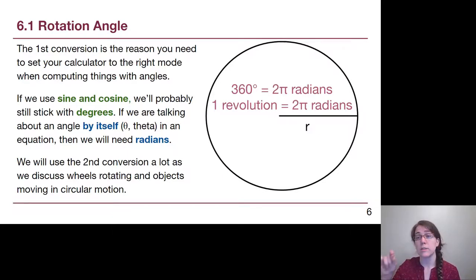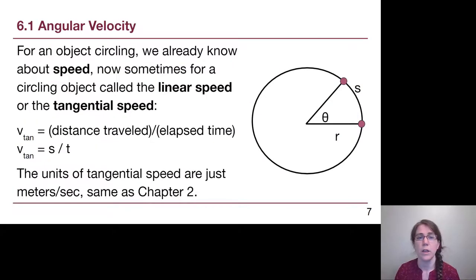This second conversion is one that we've probably not really seen before, but will be our more used conversion. One revolution is an object has made one full circle all the way around. If you have seen RPMs show up, whether it's on the dashboard of your car or if you have a record player at home, RPM is revolutions per minute.